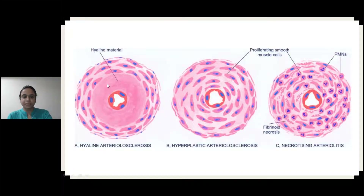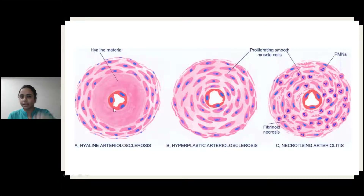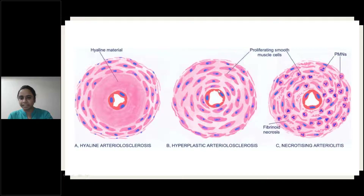See here — this is hyaline arteriosclerosis. You can see eosinophilic, acellular hyaline material is deposited. And this is hyperplastic arteriosclerosis. The intimal muscles are hyperplastic, leading to onion peel formation.